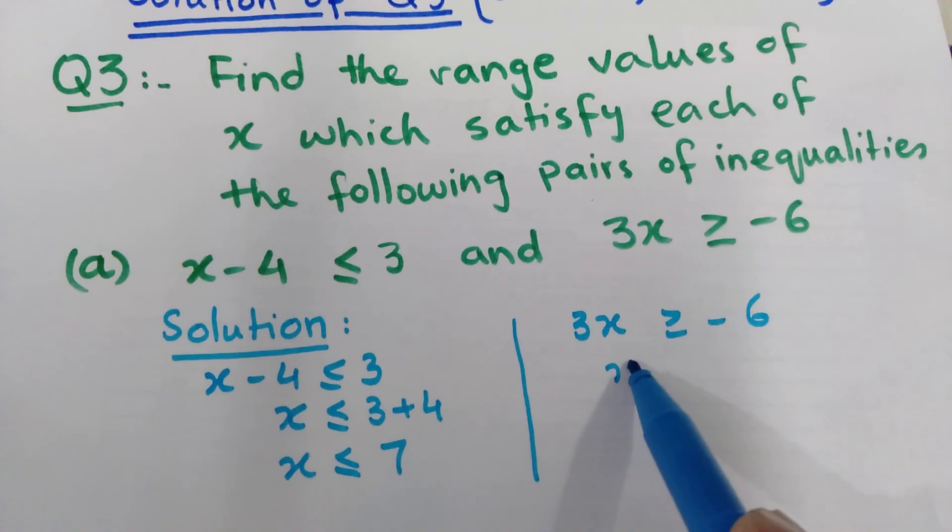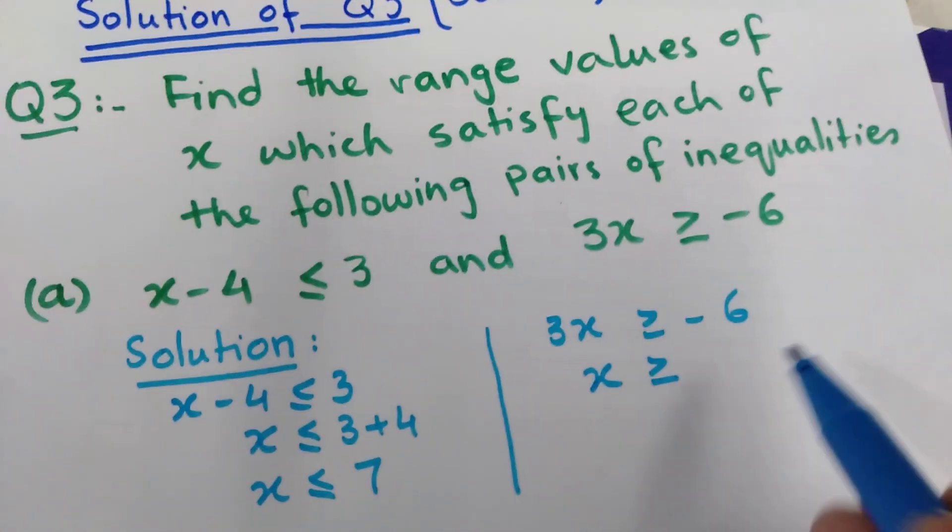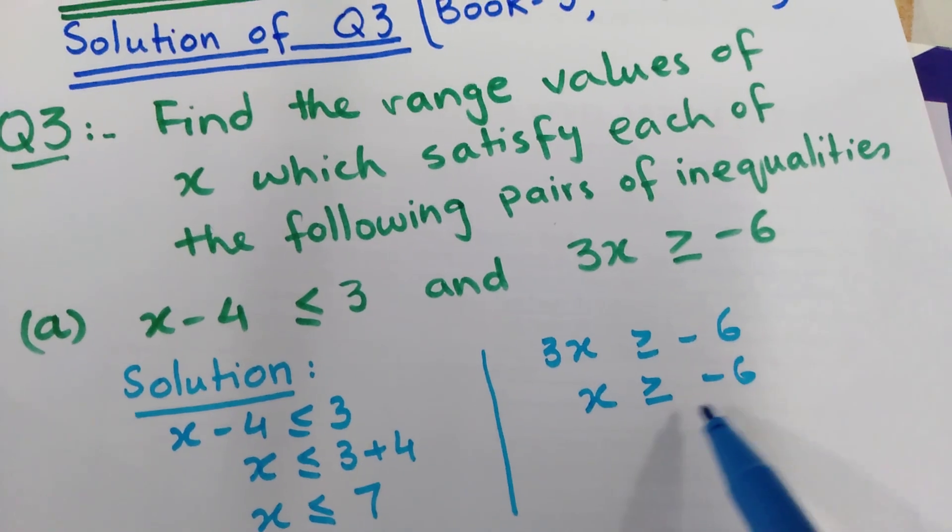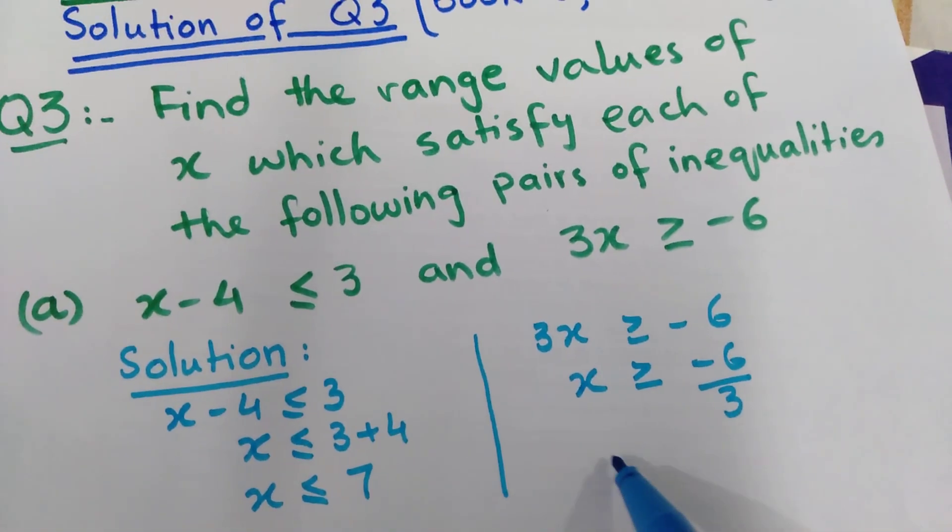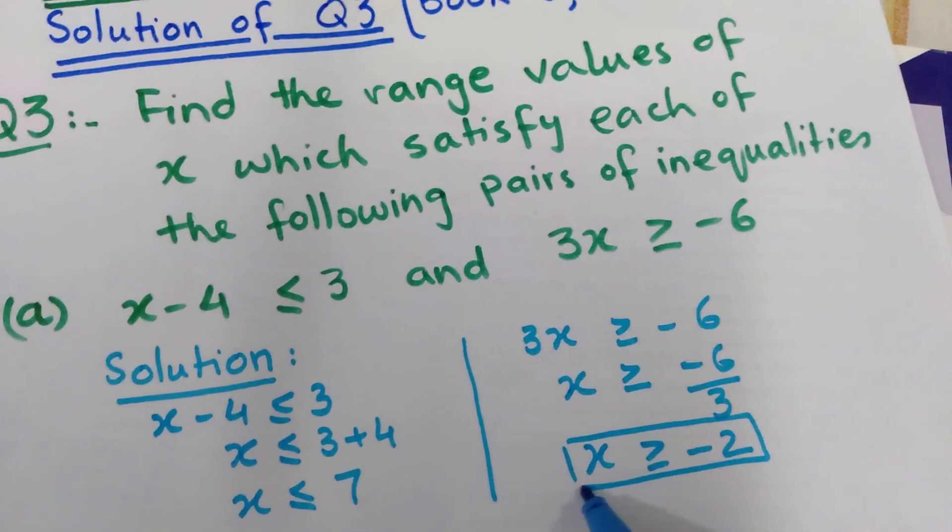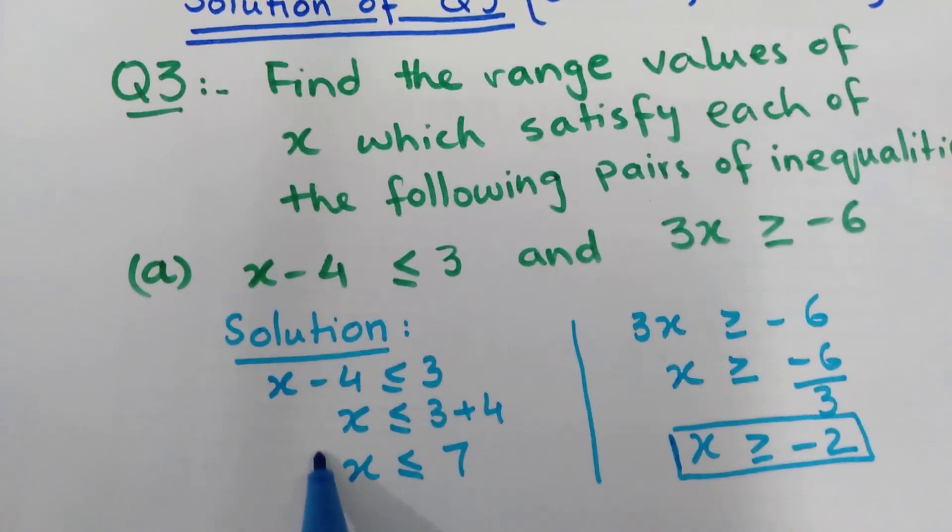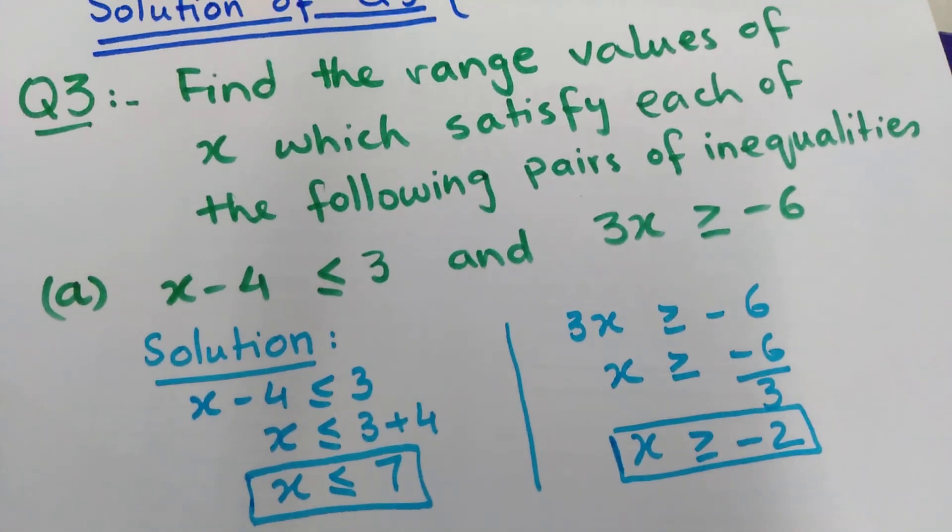Take another inequality here: 3x greater than or equal to minus 6. Now shift 3 to that side. Minus 6 divided by 3. x is greater than or equal to minus 2. But these values are not your answer because in this question the examiner asks to find a range of values.